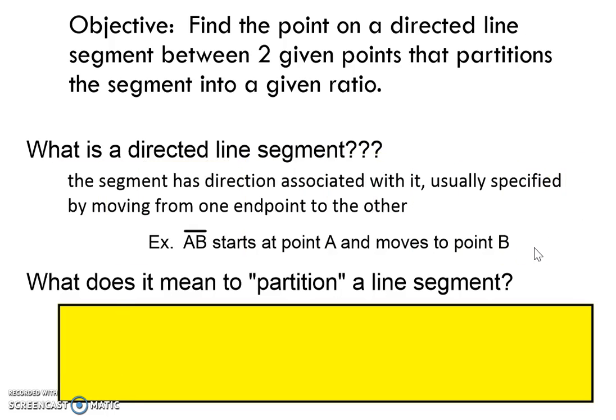A directed line segment is a segment that has a direction associated with it, so it has a specific starting point and a specific ending point. So AB would be a segment that starts on point A and moves to point B. Most of the time a line segment doesn't matter where you start and end, but here it does — two-thirds of the way from A to B is different than two-thirds of the way from B to A. So we need to have that direction.